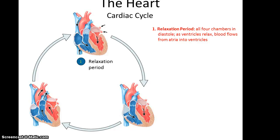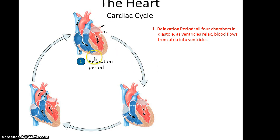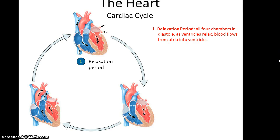This relates to what's referred to as the cardiac cycle, which is the beating of the heart. The heart starts off in the relaxation period — this is when all four chambers of the heart are in diastole, or basically are not contracted. At this point, blood is able to flow from the atria into the ventricles, although as the blood flows in, there's still also blood in the atria.